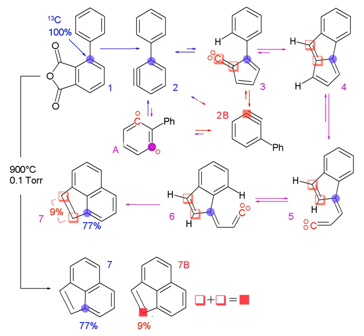Some of the most common stable isotopes are ²H, ¹³C, and ¹⁵N, which can be further produced into NMR solvents, amino acids, nucleic acids, lipids, common metabolites, and cell growth media.